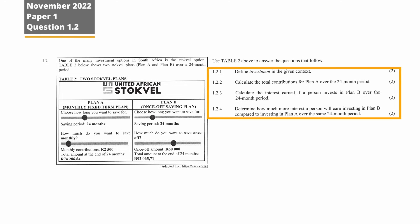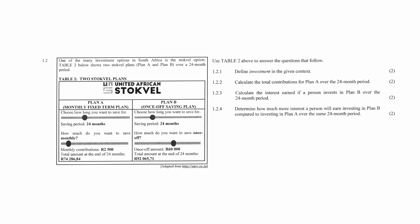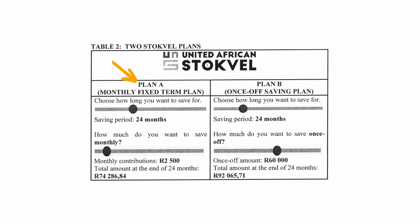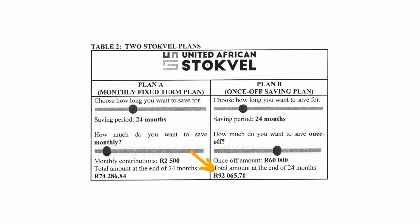Question 1.2 consists of four finance questions designed to assess your understanding of investment options in the South African context. You are given two stock fund options, Plan A and Plan B, in Table 2. Plan A is a monthly fixed-term plan for 24 months with a monthly contribution of $2,500, and a total amount at the end of 24 months predicted to be $74,286.84. Plan B is a once-off saving plan for 24 months requiring a once-off investment of R60,000, with a total amount predicted to be $92,065.71.